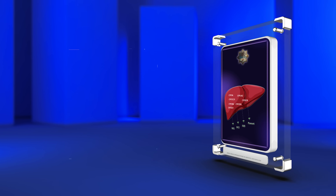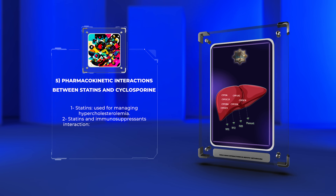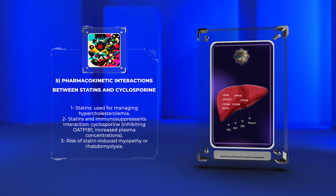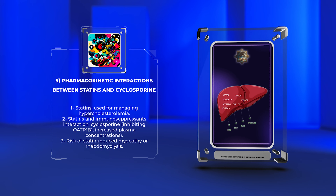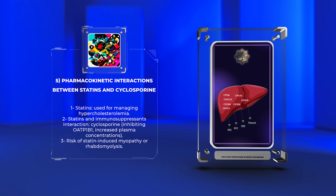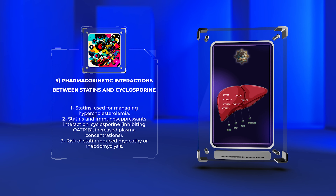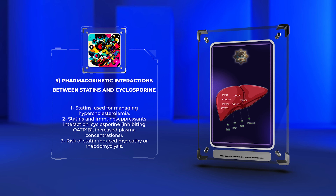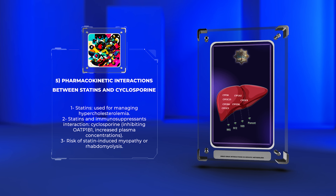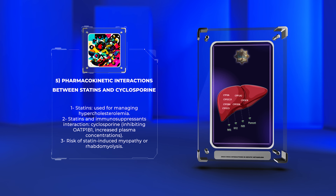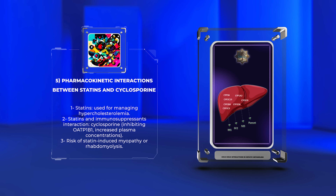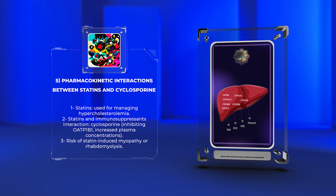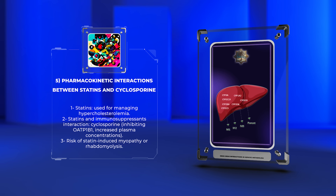Statins, a class of drugs used for managing hypercholesterolemia, can undergo significant drug interactions when co-administered with immunosuppressants such as cyclosporine. Cyclosporine inhibits the liver uptake transporter, leading to reduced hepatic uptake of statins and subsequent increased plasma concentrations. This interaction can increase the risk of statin-induced myopathy or rhabdomyolysis. Determining appropriate statin dosing and closely monitoring patients on combined therapy is crucial to minimize the risk of adverse events.